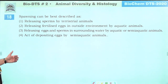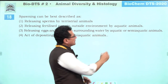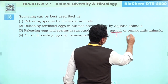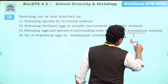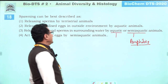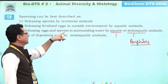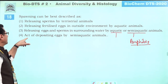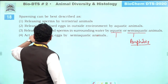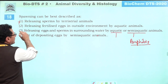Spawning means releasing of eggs and sperm in surrounding water by aquatic or semi-aquatic animals. Aquatic animals include fishes and invertebrates; semi-aquatic includes Amphibia. Spawning means releasing of gametes in the surrounding water. Other statements are incomplete. So this is the right answer.